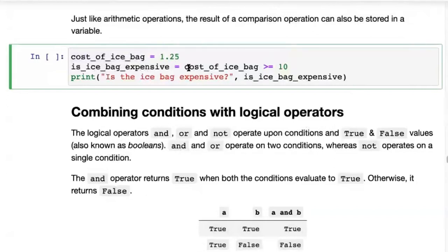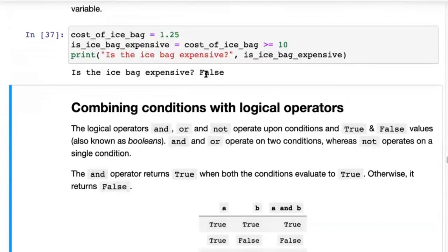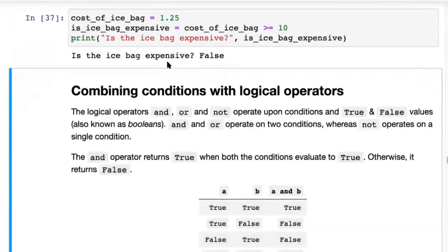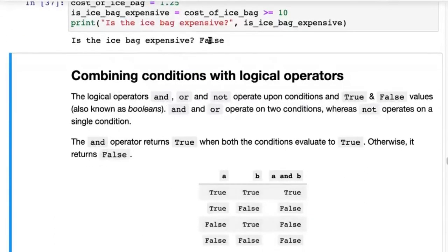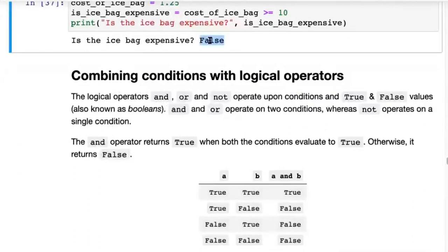For example, cost_of_ice_bag is set to 1.25, then we have the comparison: is the cost_of_ice_bag greater than or equal to 10? It's not, so the result should be False. We take that result and put it into the variable is_ice_bag_expensive, then put that variable into a print statement just like any other variable. Variables are really useful because you can store information and access it anywhere. The result: is the ice bag expensive? False.